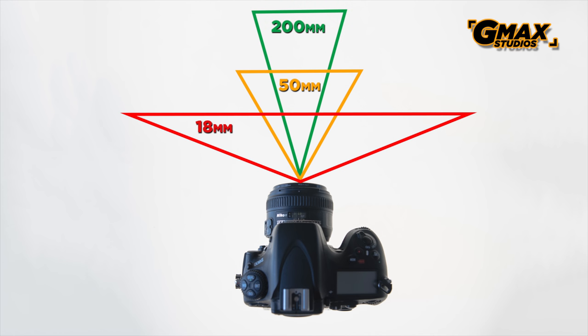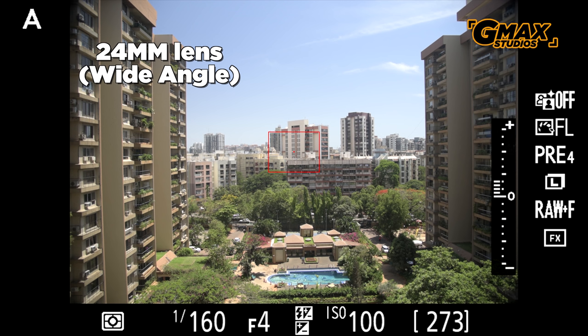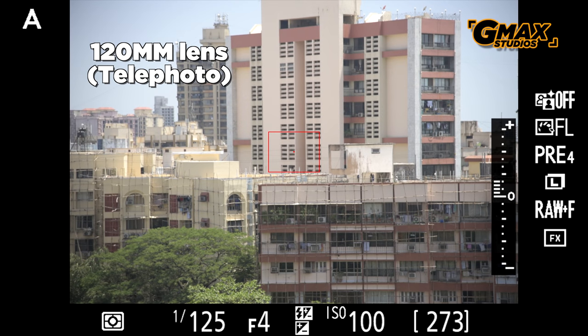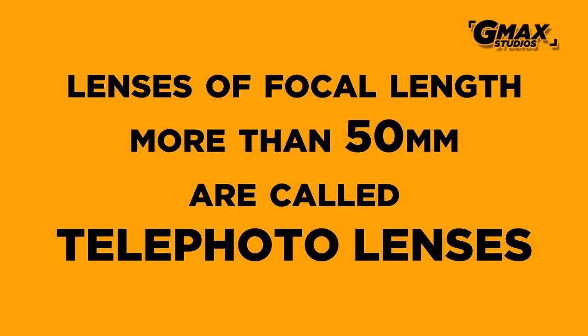Similarly, as the focal length becomes more than 50 — like 85, 105, 135, or 200mm — the lenses start seeing in a more narrow field of view, making objects appear as if they have come closer to us. These are called telephoto lenses. A lot of lens makers designate their lenses as medium telephotos, super telephotos, super-wides, or ultra-wides. For me, this is purely jargon — what is important is the focal length of the lens.